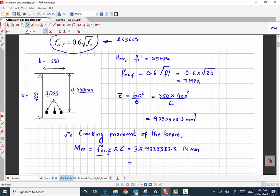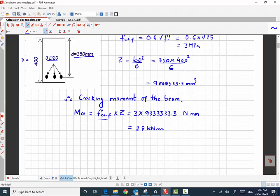So if we convert into kilonewton meter it will be 28 kilonewton meter. What this means is that if the cracking moment for the beam, if the moment acting on the beam is 28 kilonewton meter, the beam will start to crack.